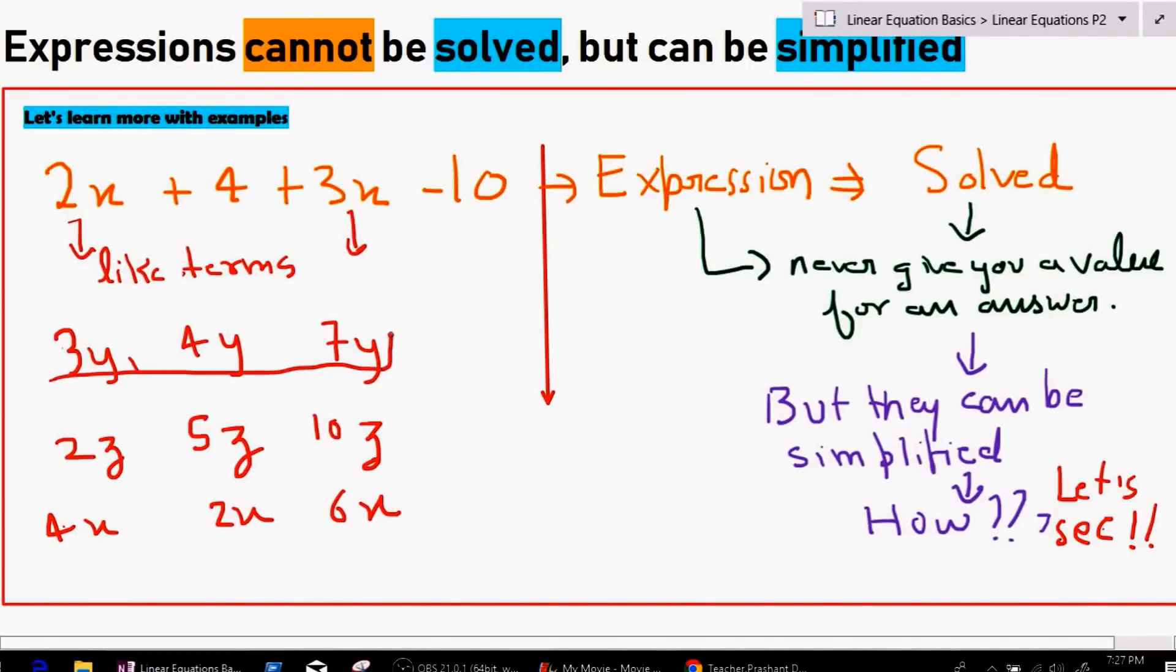Because the variables in all the terms are the same. y, y, and y. z, z, and z. x, x, and x. So we can say 3y, 4y, and 7y are like terms. 2z, 5z, and 10z are like terms. 4x, 2x, and 6x are like terms because they carry the same variable.